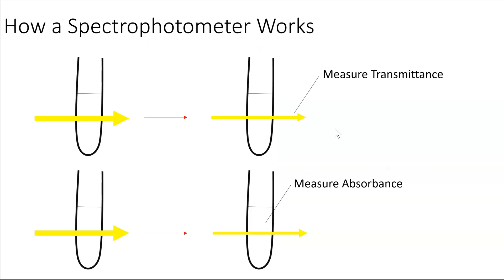How does a spec work? Spectrophotometers use light to measure the transmittance of light through a sample or by measuring the absorbance of light in a sample. You can measure transmittance, the amount of light that goes through, or as light is passing through, you can measure the absorbance of that light in your sample.